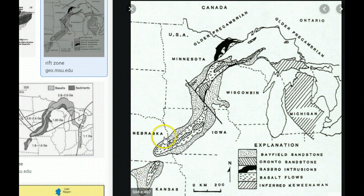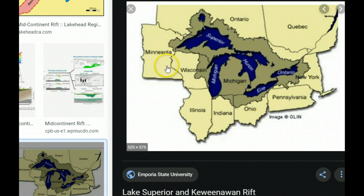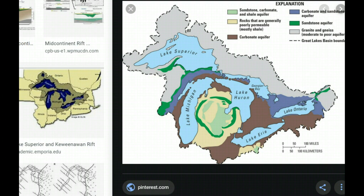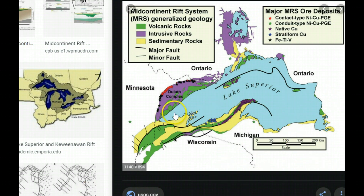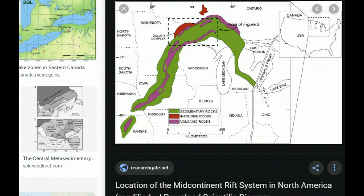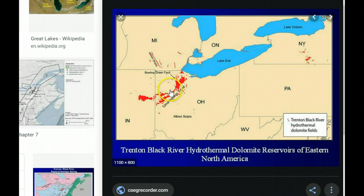Here you can see Kansas, Nebraska, Iowa, Ohio, Pennsylvania, and New York — see how it kind of goes up and around and comes back down. Much of this area is now covered by sediment, but by using ground penetrating radar, they've been able to see where this failed system is. Using a search on Google Earth, you can see here's another image of the different sections of that failed rift, and another image from ResearchGate.